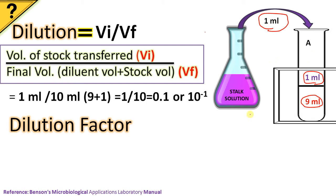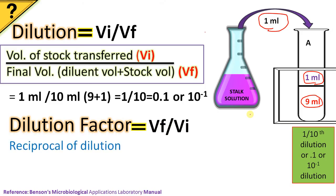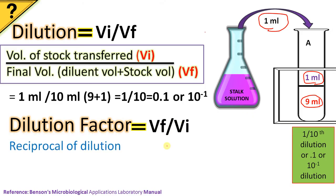Then what is dilution factor? Dilution factor is simply the reciprocal of the dilution or it is the inverse of dilution. It is Vf by Vi. So the equation becomes 10 by 1, that is 10, or 10 raised to 1 is the dilution factor.